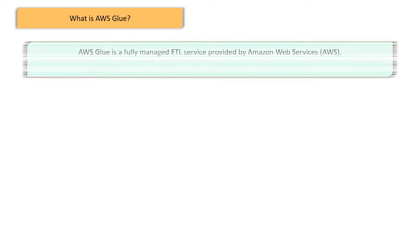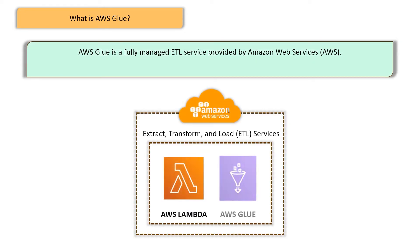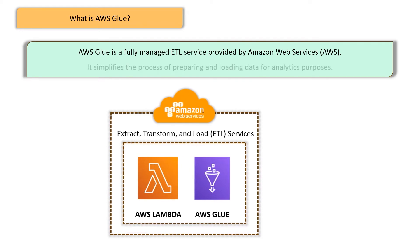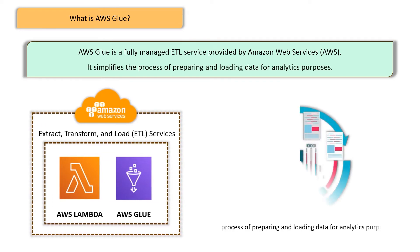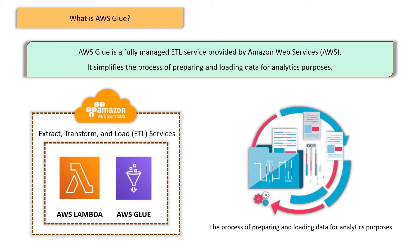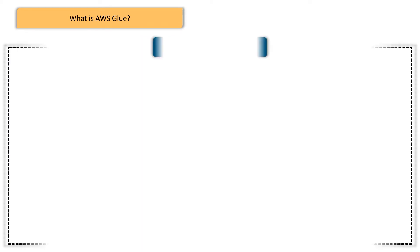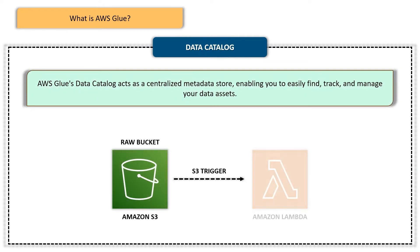So what is AWS Glue? AWS Glue is a fully managed extract, transform, and load (ETL) service. It simplifies the process of preparing and loading data for analytics purposes, making it easier for businesses to derive valuable insights from their data. Let's break down its key features that make it stand out from the crowd.